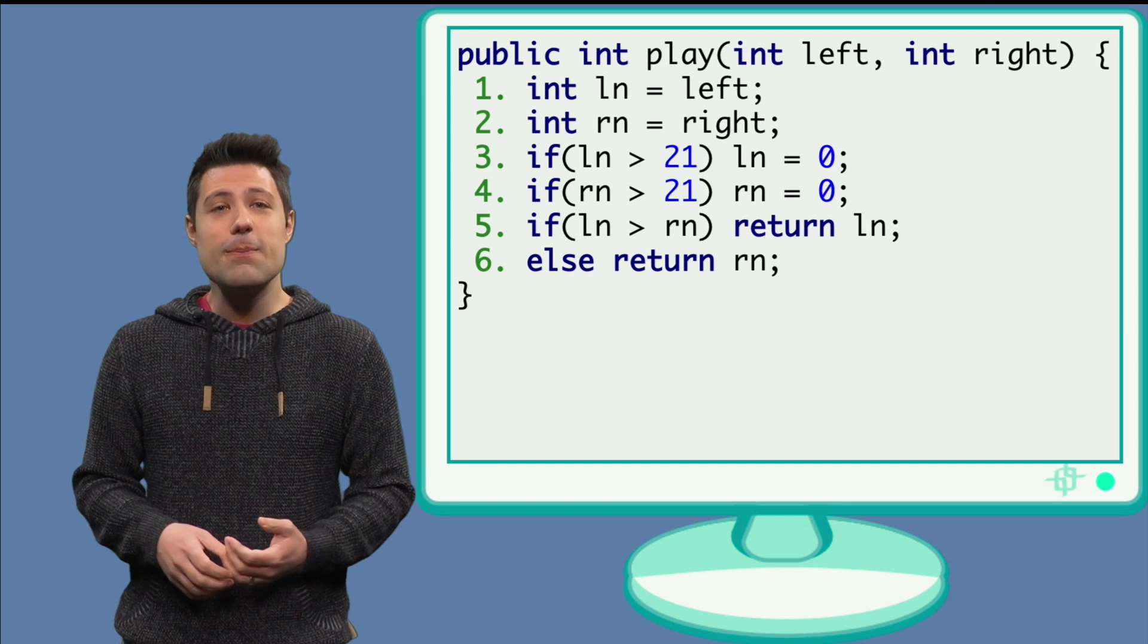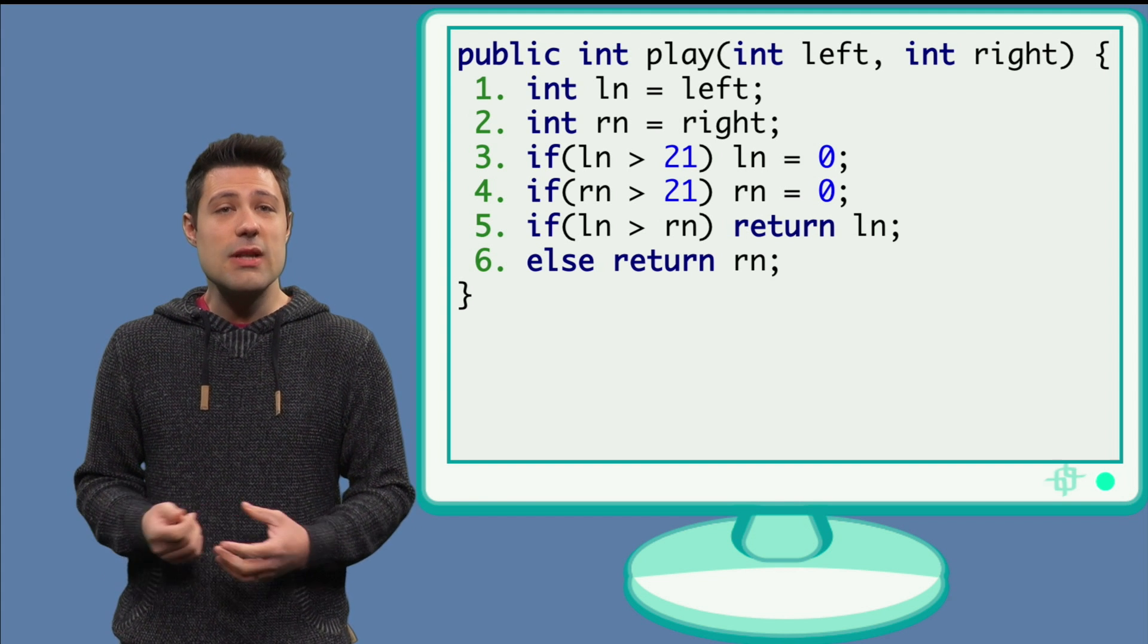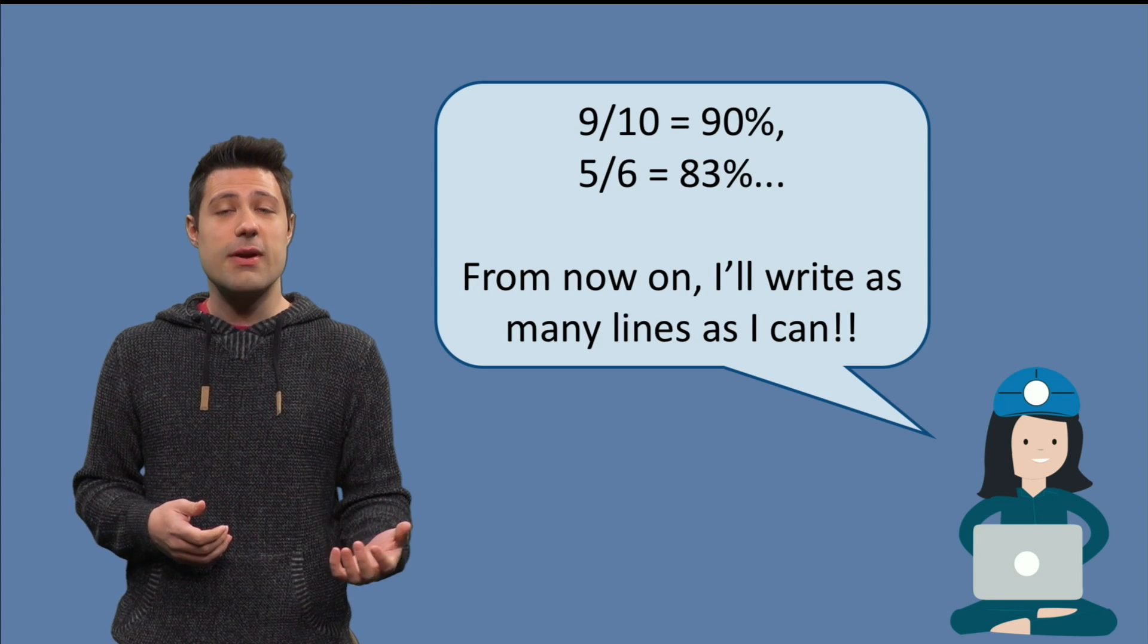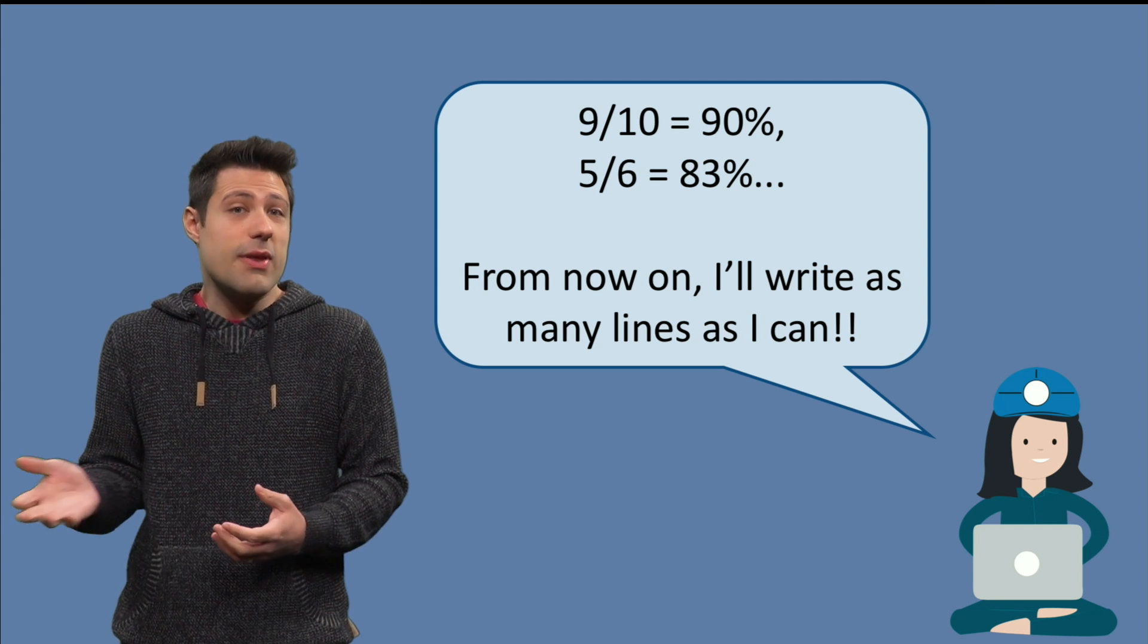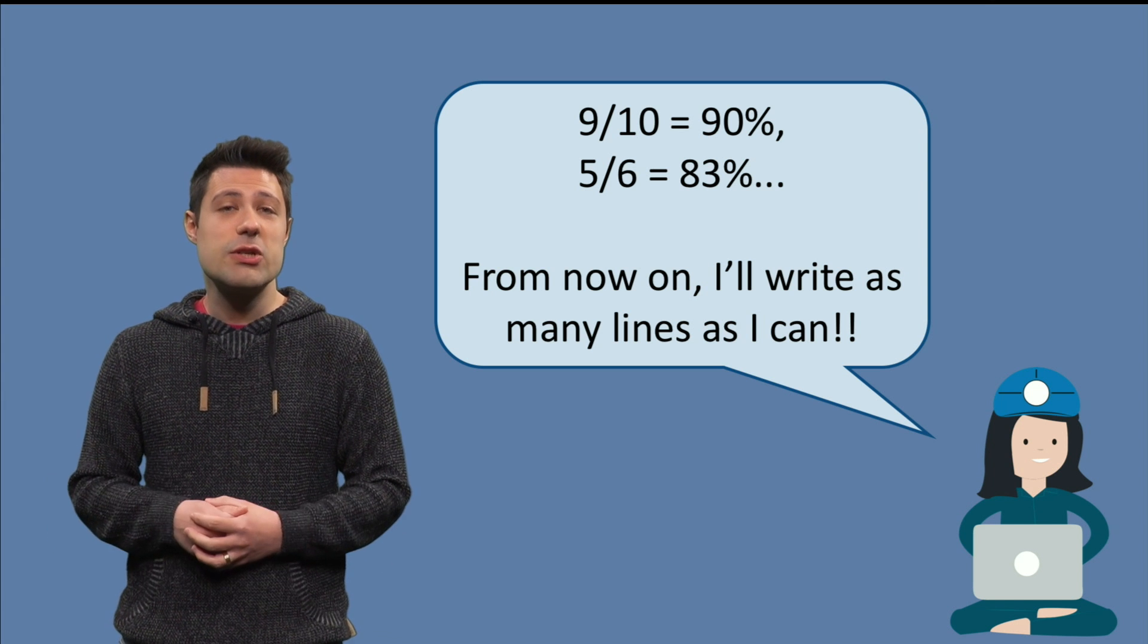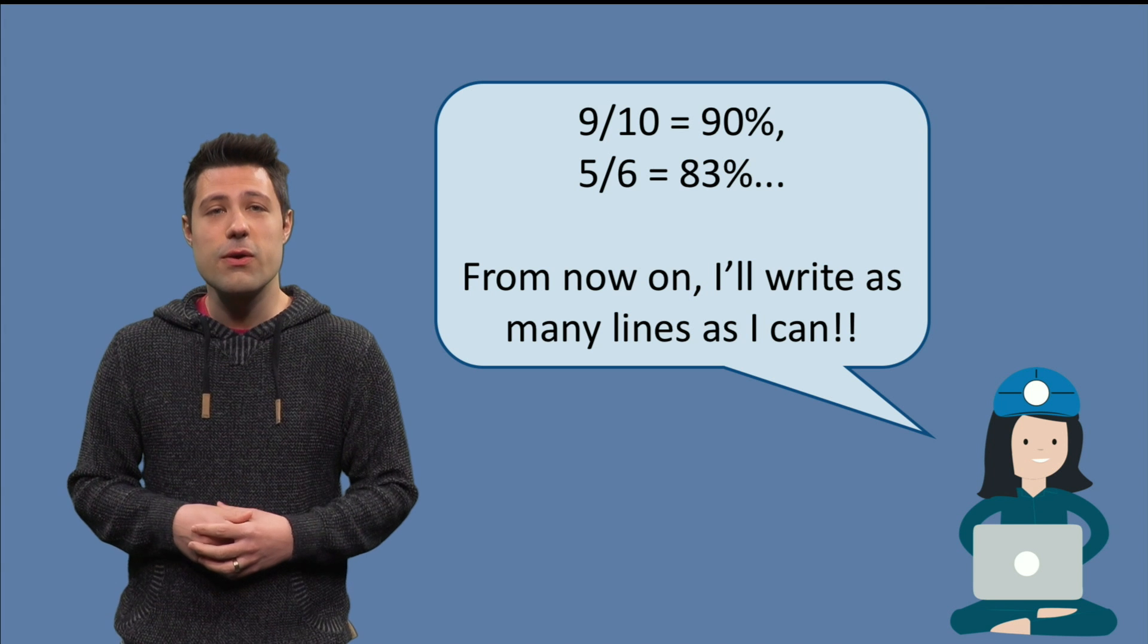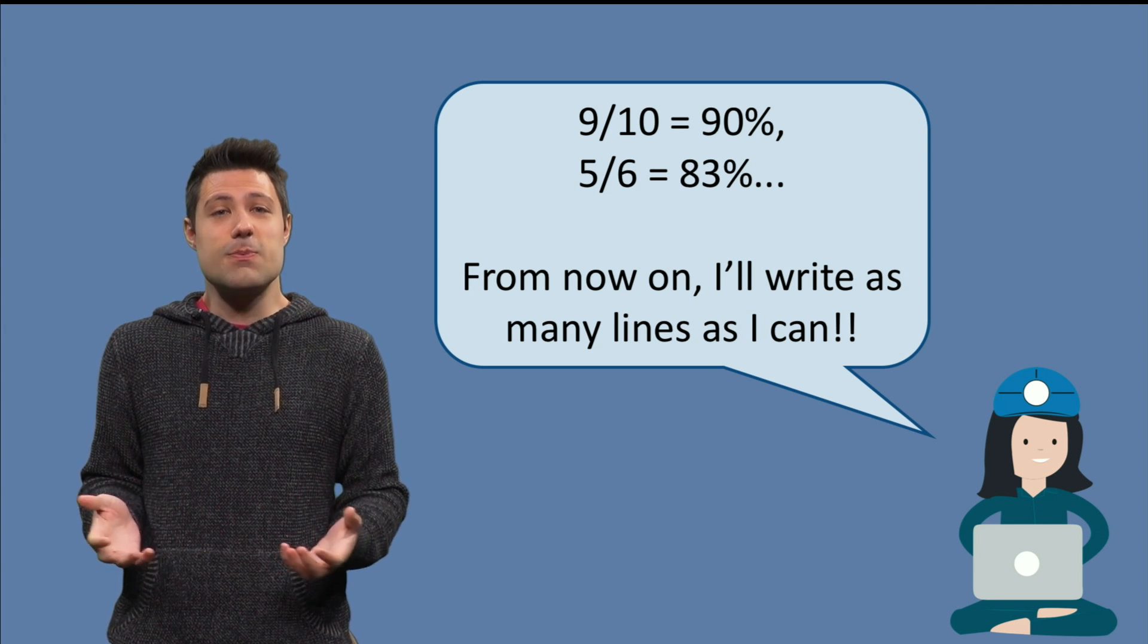And, of course, it completely changes the final outcome of our formula. If we don't test a line, we may have 9 divided by 10, which is 90% line coverage for the code with 10 lines of code, and 5 divided by 6, which is 83% for the code with 6 lines. It seems that having more lines is better.